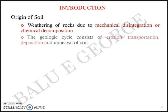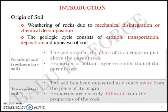The geological cycle — which consists of erosion, transportation, deposition, and upheaval — is what leads to the formation of soil the way we see it. When you talk about the formation and origin of soil, you can classify soil into two types: residual soil (or sedimentary soil) and transported soil. These might be areas you are familiar with from basic science, but we'll peripherally discuss what residual and transported soil mean.